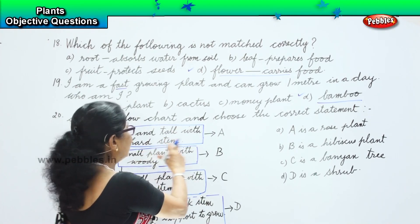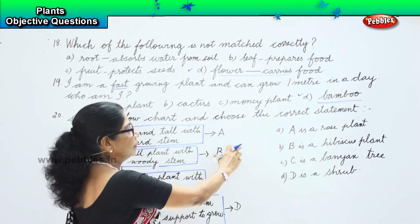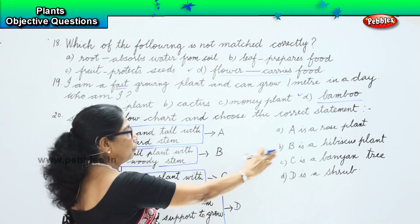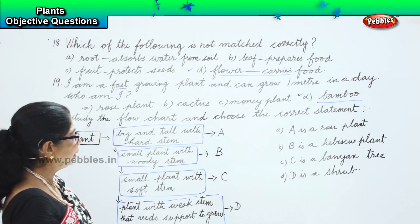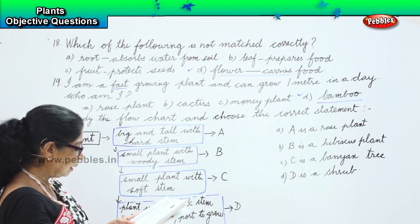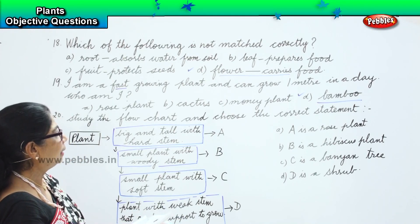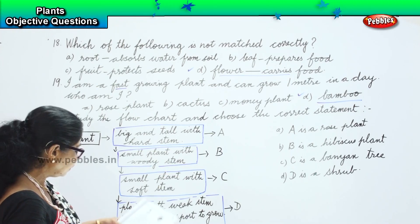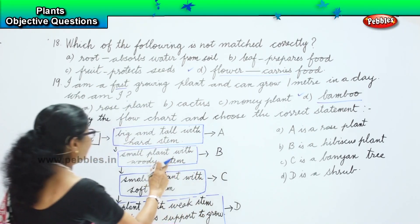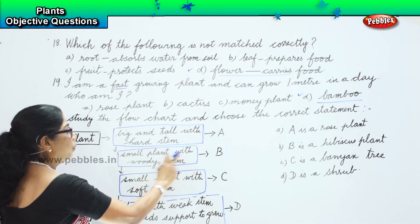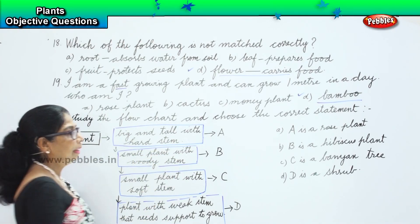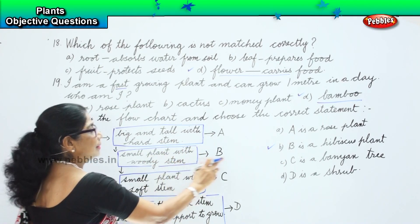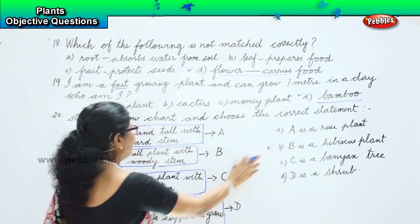Option A: big and tall plant with hard stem — this is a rose plant. Option B: small plant with woody stem. Option C: a banyan tree. Option D: a shrub. They are asking us to look at each statement and find the correct answer. Small plant with woody stem is definitely a hibiscus — according to the statement, that is correct.